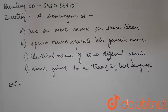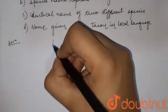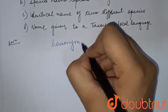We have a question: a homonym is — (a) two or more names for the same taxon, (b) species name repeats the generic name, (c) identical name for two different species, and (d) the names given to a taxon in local language. So, a homonym — homo-nym —